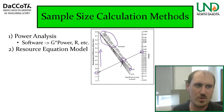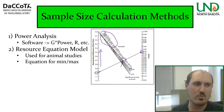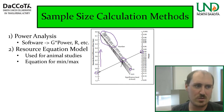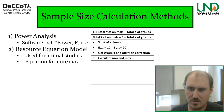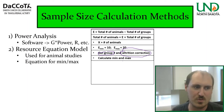Number two: the resource equation model. It's used in animal studies and isn't applicable to all designs. It gets the minimum and maximum number of animals per group. You calculate E, which is the total number of animals minus the total number of groups — essentially the degrees of freedom. The minimum E is 10, below which the sample is underpowered, and the maximum E is 20, above which it's wasting animals. To get the total number of animals, you add E to the total number of groups. Armed with group number and an attrition correction (10–20%), you can calculate the minimum and maximum number of animals per group.